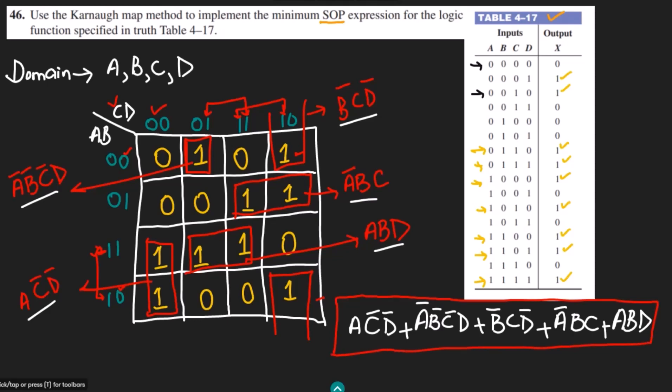This is the solution of problem 46. We have seen all the steps involved in this four-variable Karnaugh map. That is it for today, and I will see you with some more interesting questions in our upcoming video. Thank you so much.